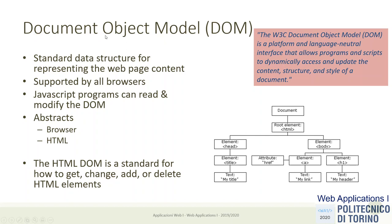The W3C Document Object Model is a platform- and language-neutral interface — not an implementation but the definition of an API specification. This interface allows programs and scripts to dynamically access and update the content, structure, and style of a document. I can modify or read the content, so I can modify the text, the images, the style — something can be made to appear or disappear, shift, change the style, change the color, and so on.